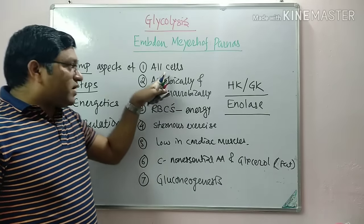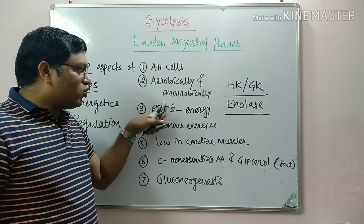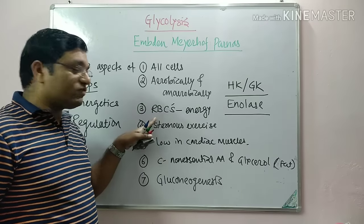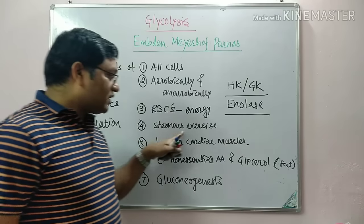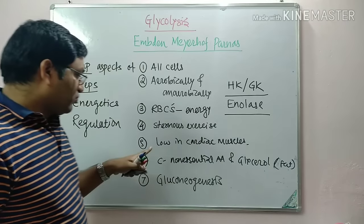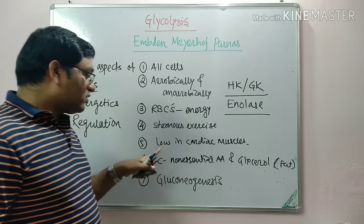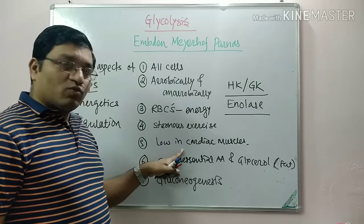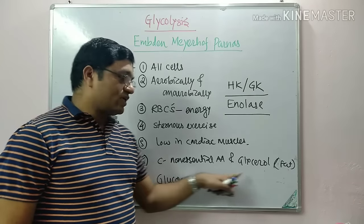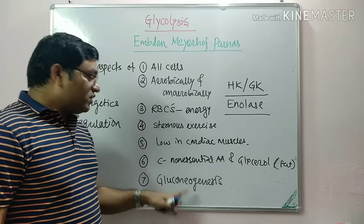To recap: this pathway occurs in all cells of the body in the cytoplasm; it operates in both aerobic and anaerobic conditions; it provides energy to matured RBCs and is the only source of energy for them; during strenuous exercise, energy is provided by anaerobic glycolysis; there is low activity of glycolysis in cardiac muscles, which is why ischemia or myocardial infarction has poor prognosis; and the reversible steps in glycolysis are also involved in gluconeogenesis.